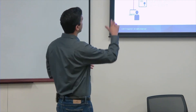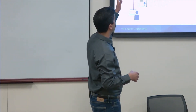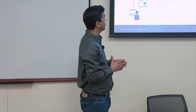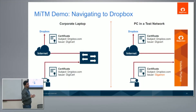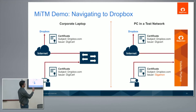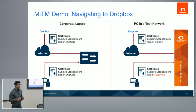This was the topology I used for my corporate network. I went to Dropbox and saw the issuer was DigiCert because there was no man-in-the-middle. Then I went to the same file sharing website and saw the issuer was Gigamon because there is man-in-the-middle happening in the network.